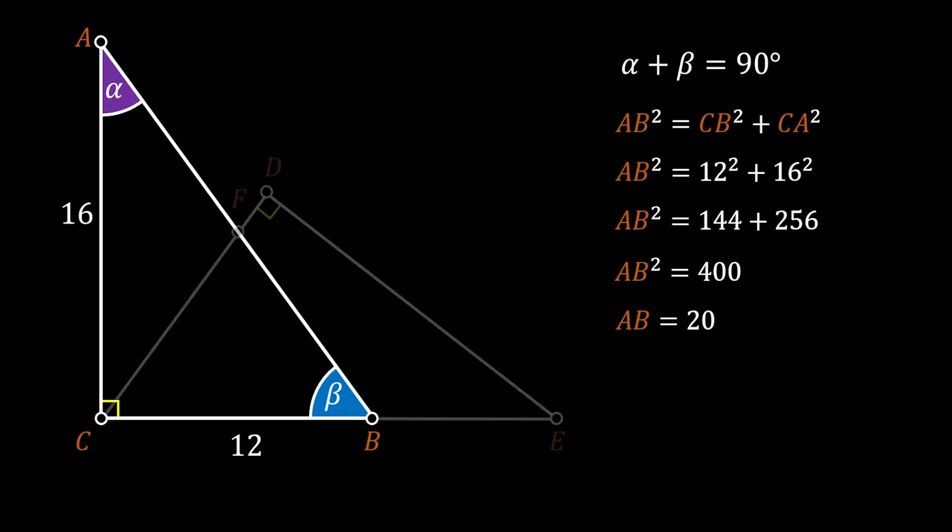Now let's go back to our previous sketch. We can also label the angles for the triangle CDE. Since this triangle is congruent with the triangle ABC, that means that the angle at the point E must be alpha and the angle at the point C must be beta.